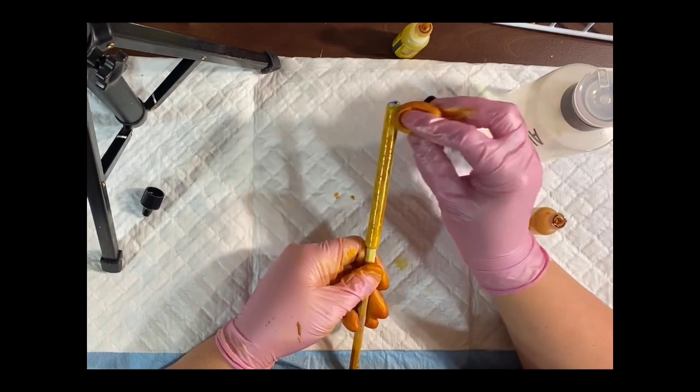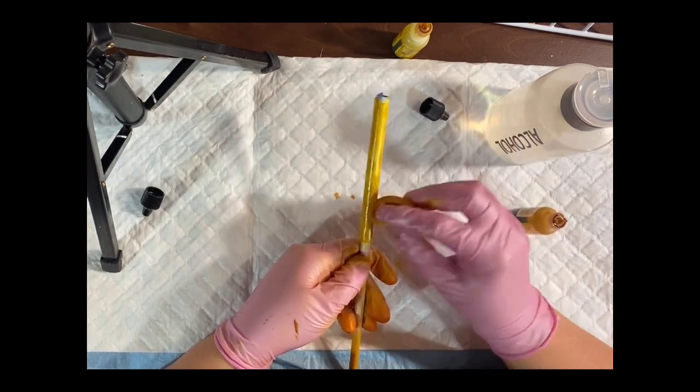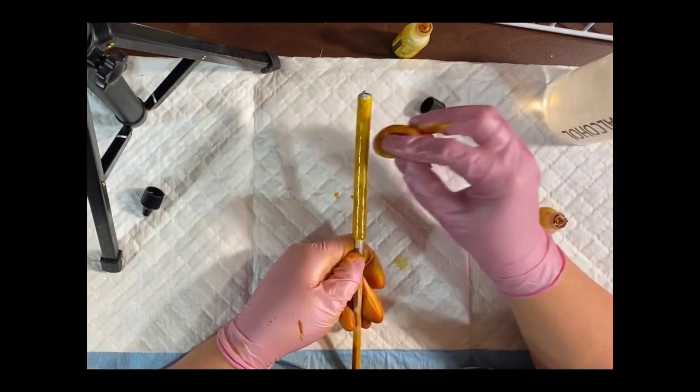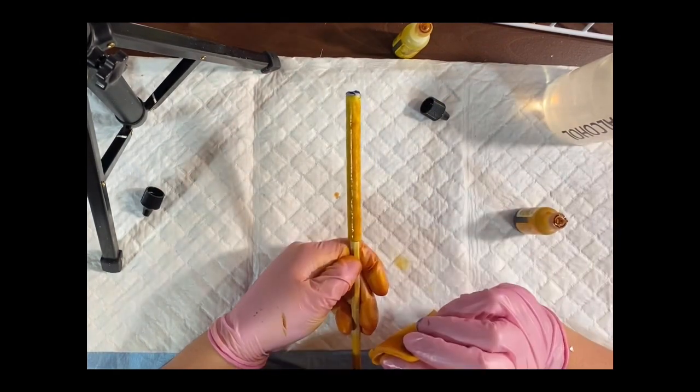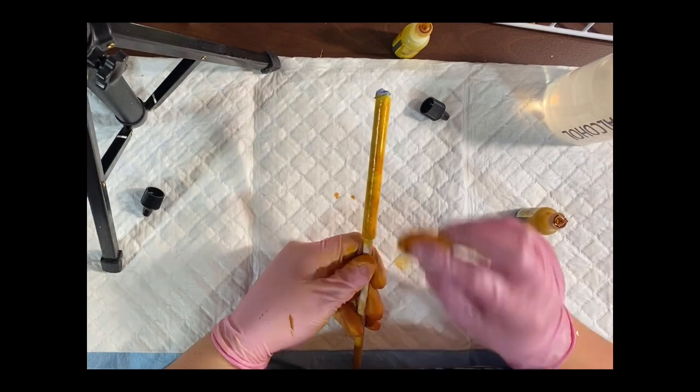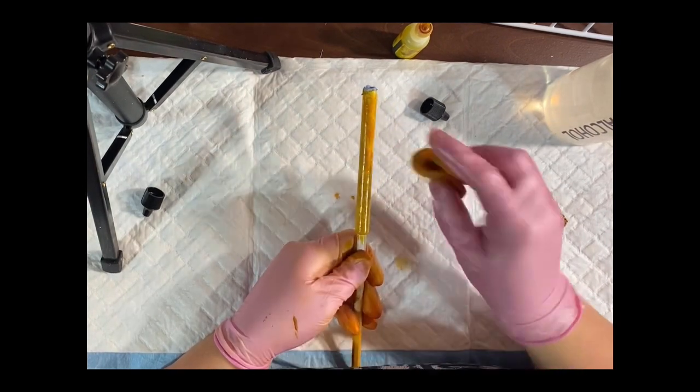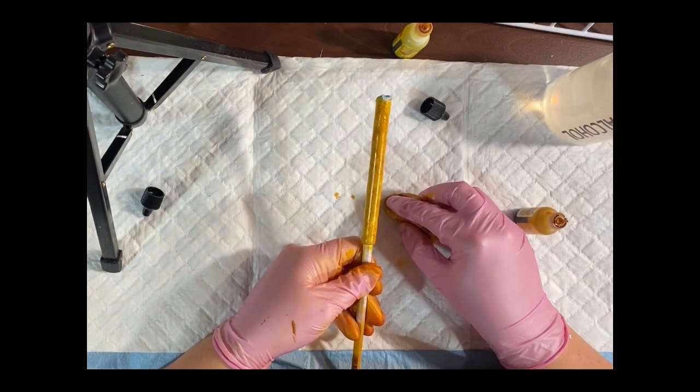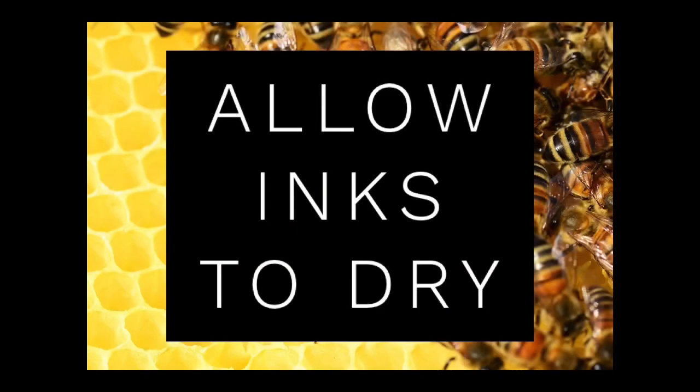It will kind of break it up into more bubbles. I tend to like more of a darker honeycomb, so I use more honeycomb because it's more of that darker yellow. If you want more of the vibrant bright yellow, add more Daffodil. I allow my inks to dry hours if not overnight before I do anything with them.